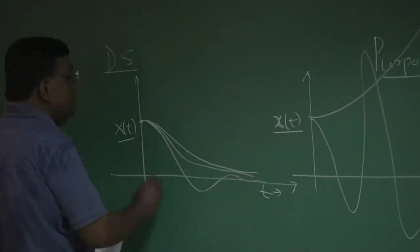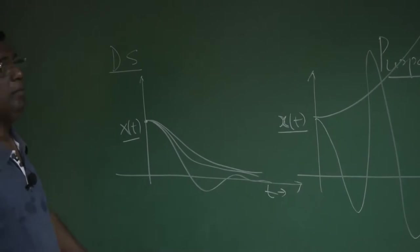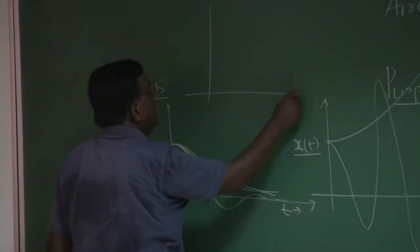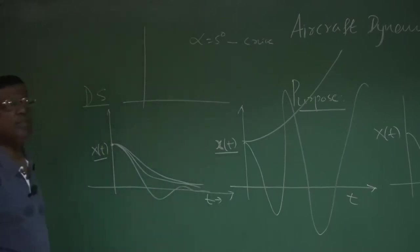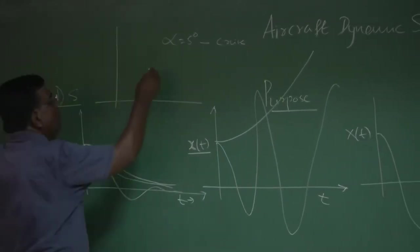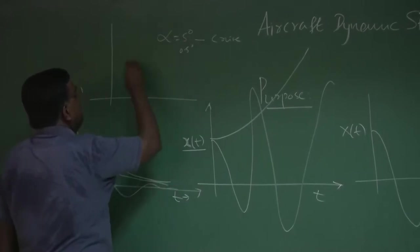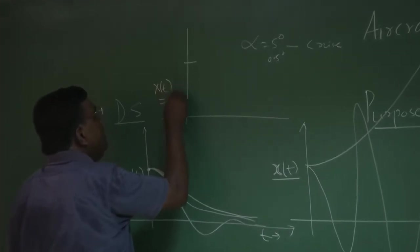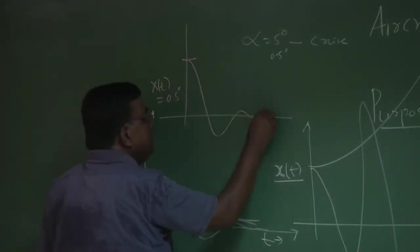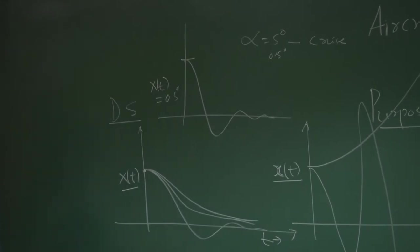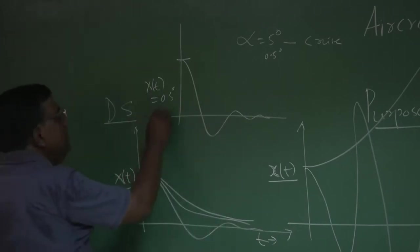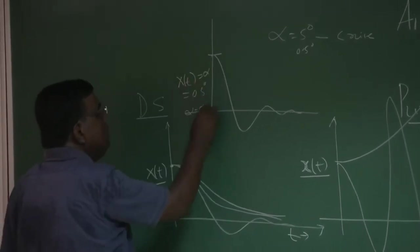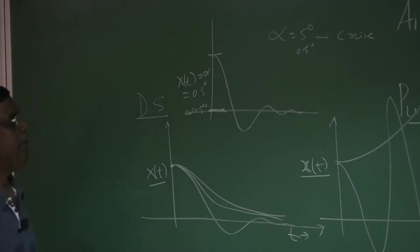When we write x(t), this is the disturbed or perturbed variable. Suppose the airplane was flying at alpha equal to 5 degrees and maintaining a cruise. If I give a small disturbance of 0.5 degrees in alpha, then x(t) is 0.5 degrees. If it comes back, we say the disturbed quantity has vanished, returning to the original equilibrium at 5 degrees — showing the aircraft is dynamically stable.